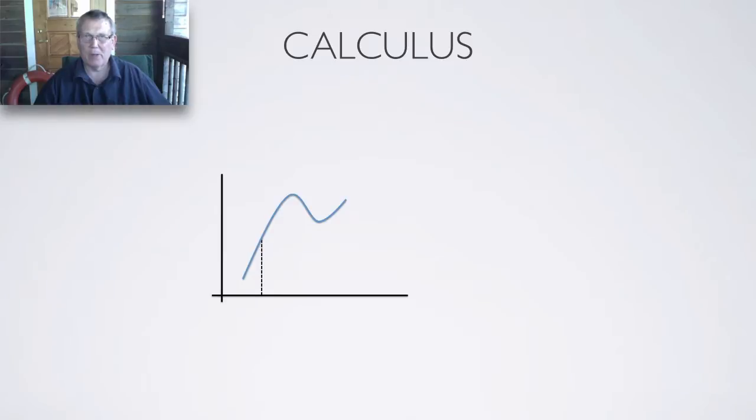Consider the graph of a function as shown here and the point indicated. To find the tangent line we first draw a secant line that intersects the graph of the function at the indicated point. It is the red secant line. Then we let this secant line turn around the point at which we need to find the tangent line. At the limit this secant line becomes the tangent line. This is a way to find tangent line.